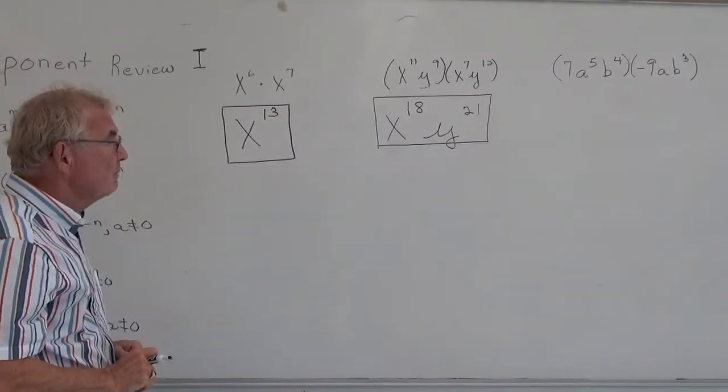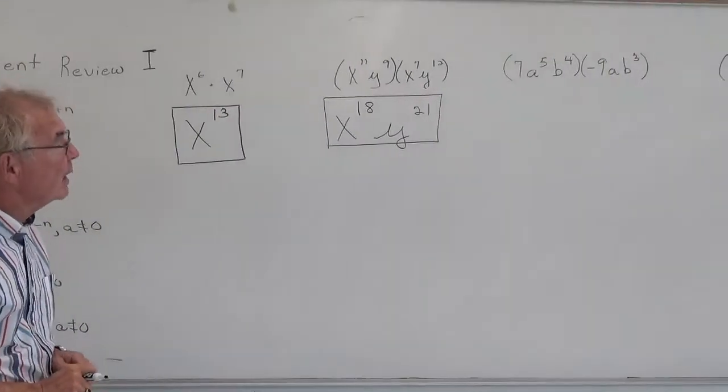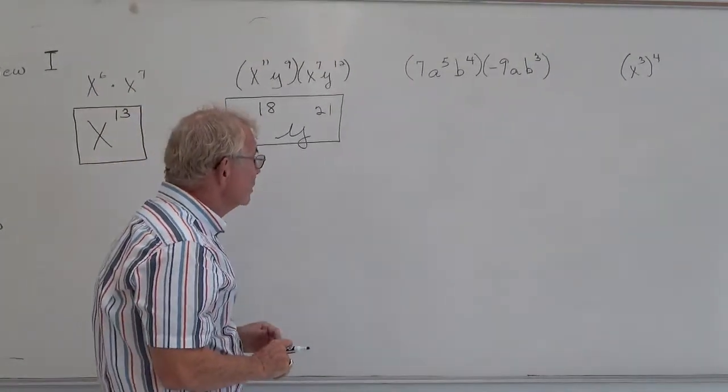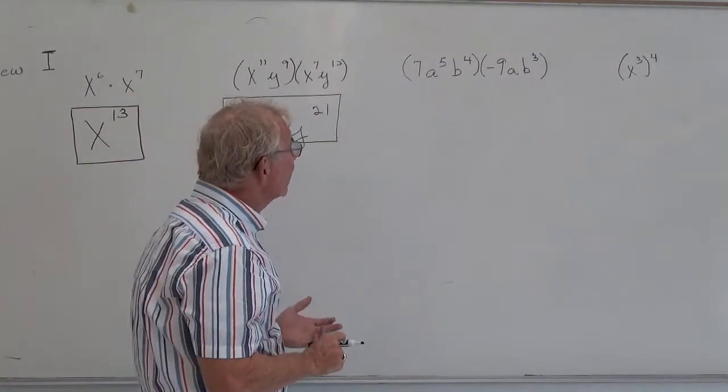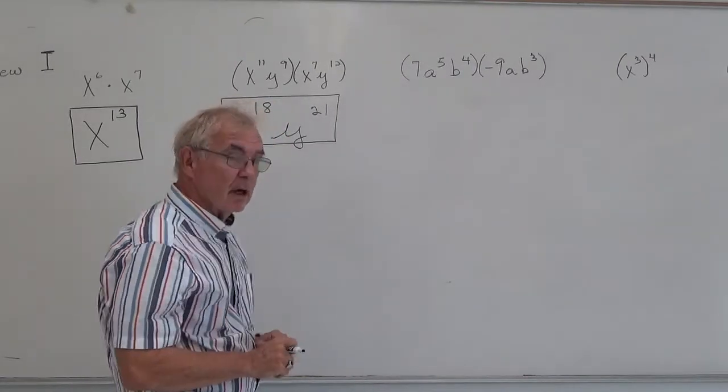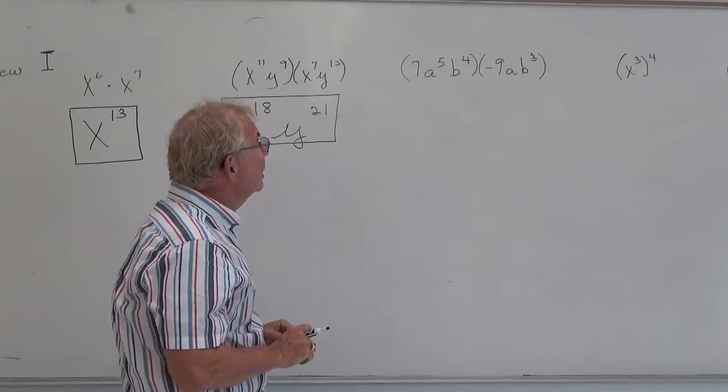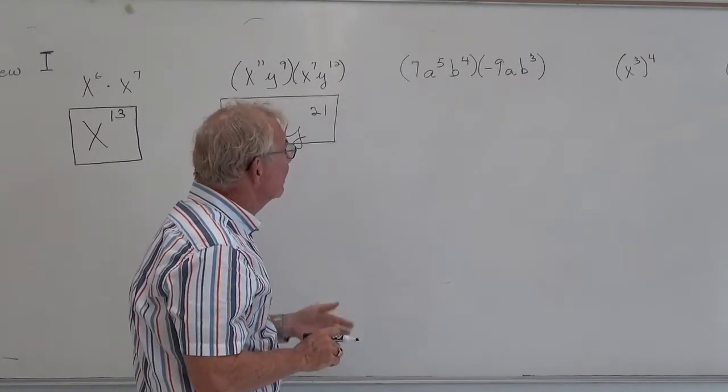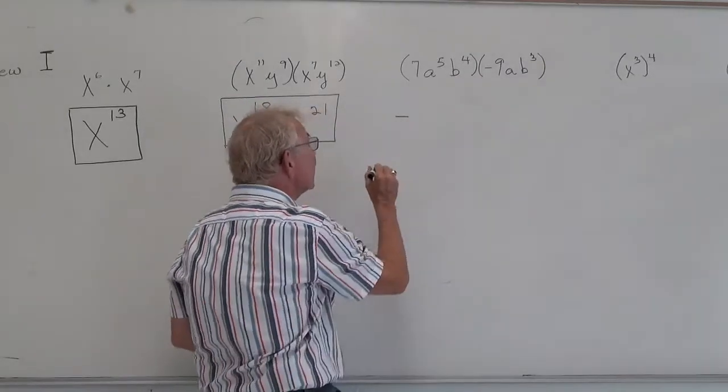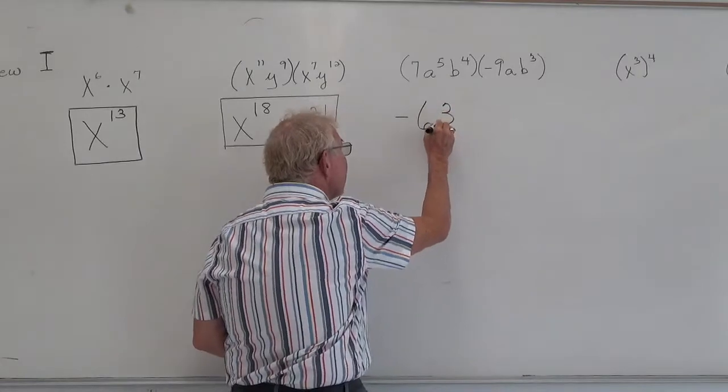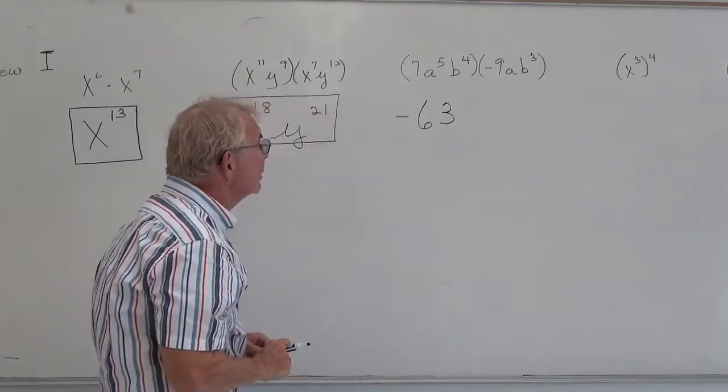Moving along to our third example. So now we have numbers in front, the coefficients. So our first step is, since this is multiplication, we multiply 7 times negative 9, just like we would in regular multiplication. And a positive times a negative is a negative, and 7 times 9 is 63.